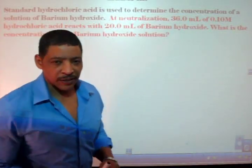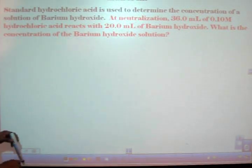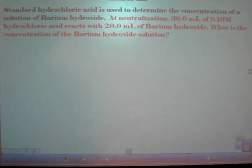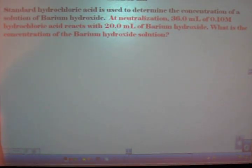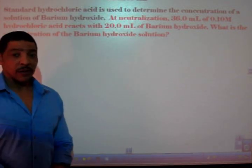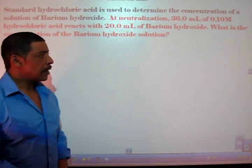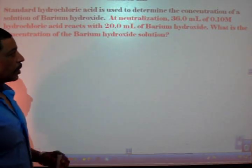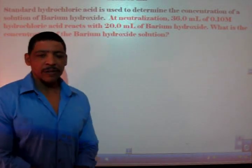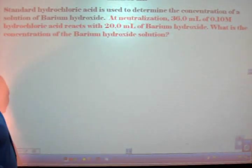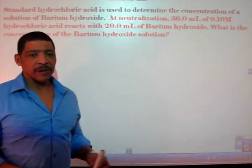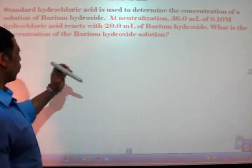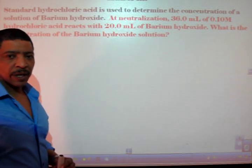Let's try one more practice problem. Standard hydrochloric acid is used to determine the concentration of a solution of barium hydroxide. At neutralization, or at the end point, 36 milliliters of 0.10 molar hydrochloric acid reacts with 20 milliliters of barium hydroxide. What is the concentration of the barium hydroxide solution?